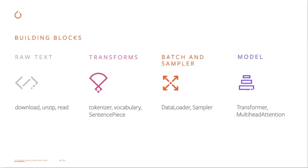Thirdly, we want to engage with the community and discover novel technology. As people know, the NLP domain moves very fast. So the text domain in PyTorch wants to develop a good technology understanding in the NLP area and build new research collaborations for the future community. With those goals in mind, we provide easy access to datasets, text processing pipelines, and some NLP-related modules — our raw text datasets, transforms, and NLP-related modules.